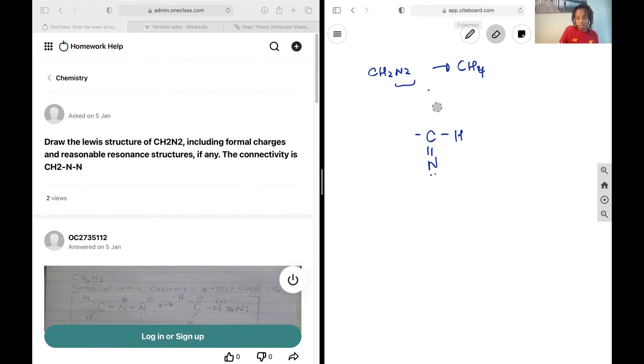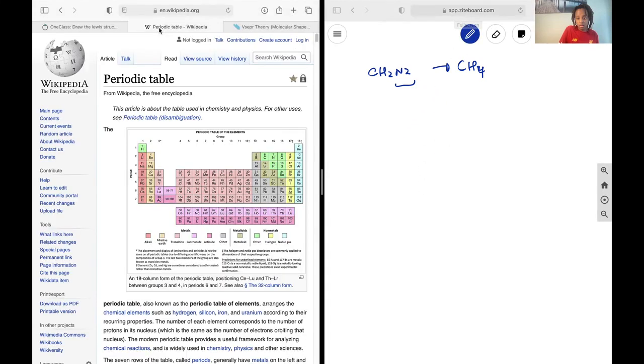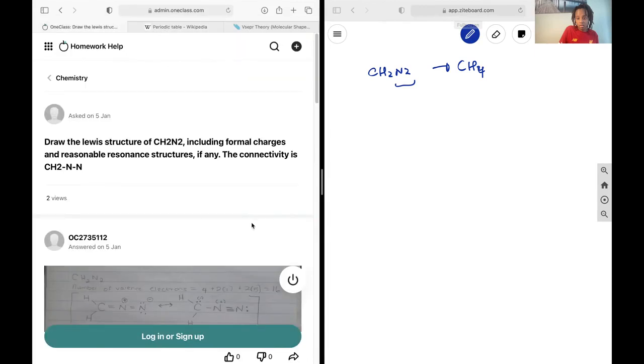Instead of having this structure, because we technically cannot have an expanded octet around carbon, it doesn't have enough orbitals to permit it. So instead, let's leave our two hydrogens attached to the carbon, attach the nitrogen, and then attach another nitrogen to that nitrogen. Fill in all of our octets.